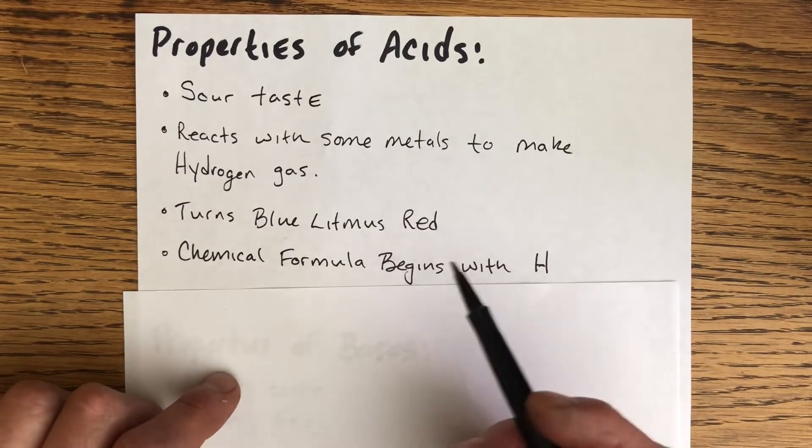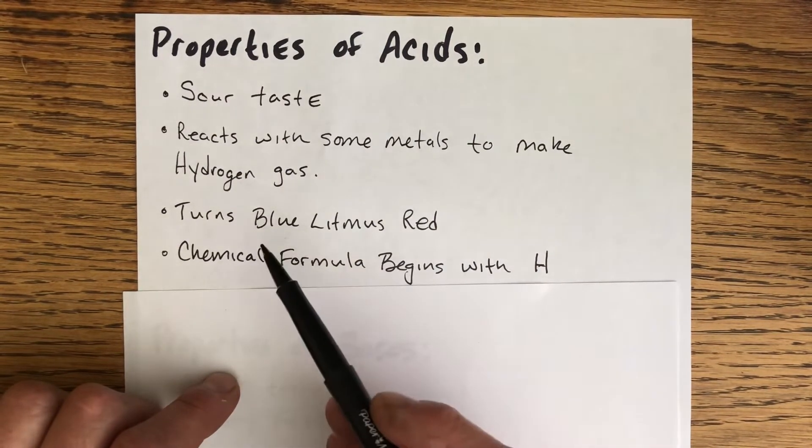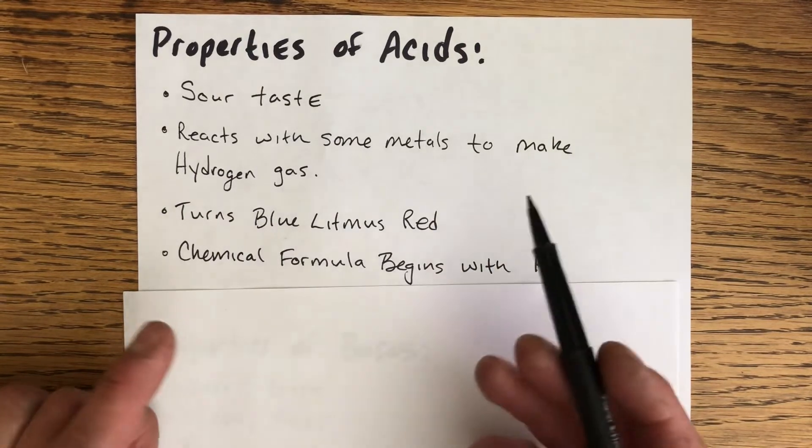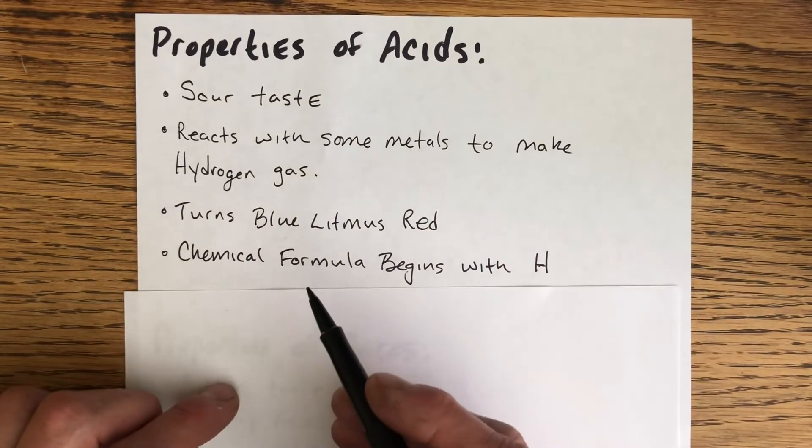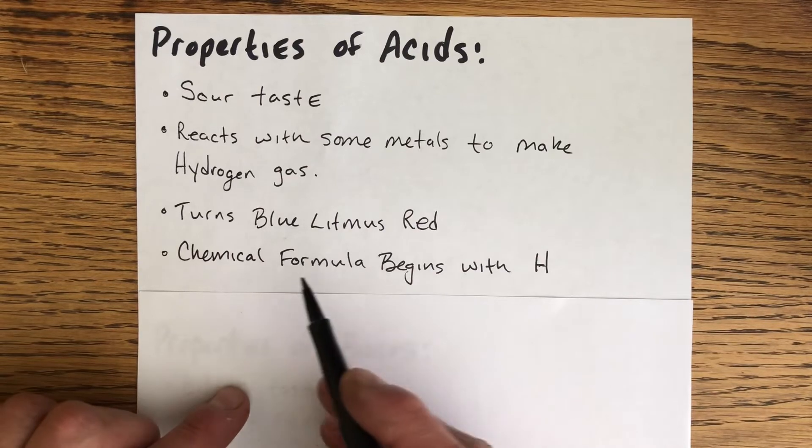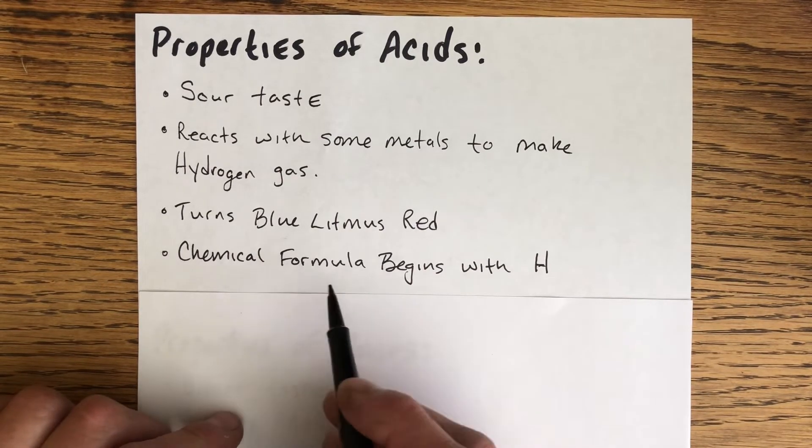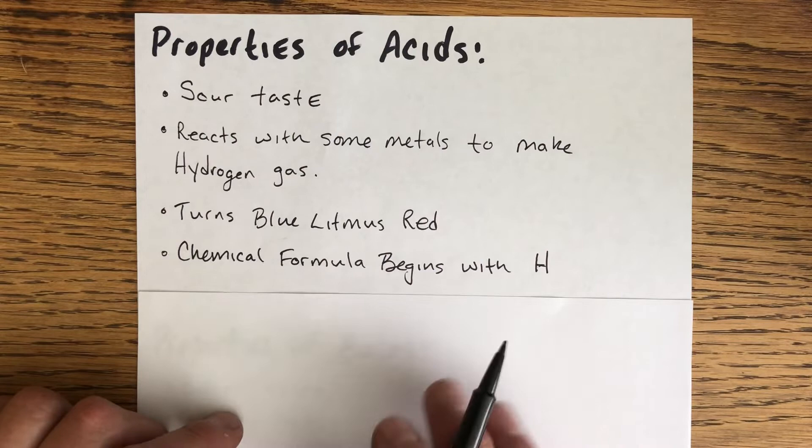Litmus paper comes in red and blue, and when you dip the blue litmus paper into acid, it will turn red. The last thing that's kind of a giveaway for what an acid might be is that its chemical formula begins with H.